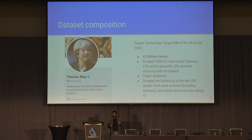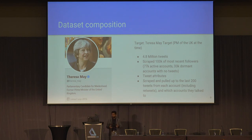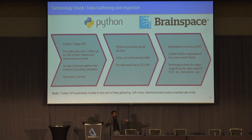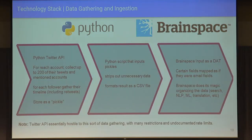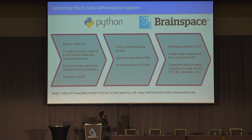We ran a Python script that would scrape her most recent 100,000 followers. From each of those accounts, we took their 200 tweets, retweets, and who they were interacting with. We also took attributes of those tweets, like what time of day they sent them and what application they used to post. We ingested all of that into Brainspace. This is the technology stack from the back end: Python using open source software, we pulled all the data, did some data engineering to clean it, and ingested it into Brainspace as a .dash file, mapping all fields to their appropriate attributes.